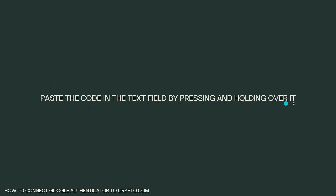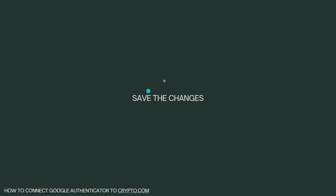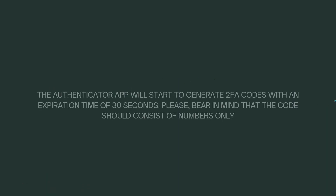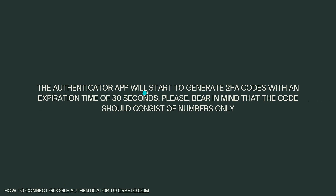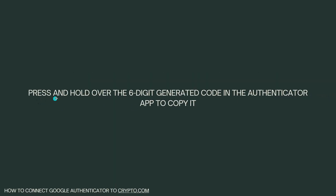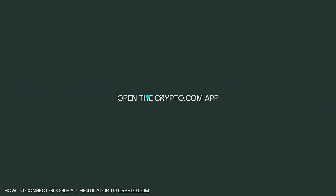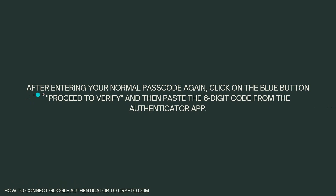Save the changes and the Authenticator app will start to generate two-factor authentication codes with an expiration time of 30 seconds. Please bear in mind that the code should consist of numbers only. Press and hold over the six-digit generated code in the Authenticator app to copy it, then open the Crypto.com application.